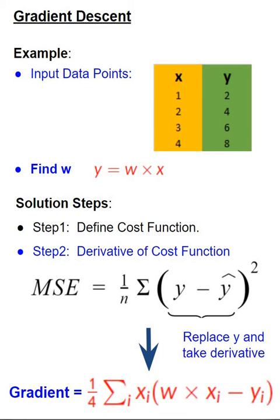Once we take the derivative, we get this equation, which is one-fourth times sum over x times (wx minus y). You might recall wx minus y is actually the error term from our previous linear regression space. Now that we have this gradient formula, this is what we're going to be using later on when we iteratively try to find a solution for w.